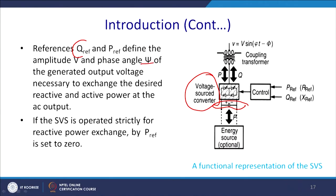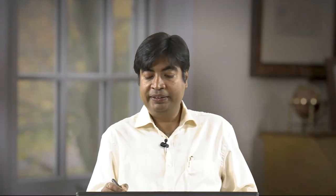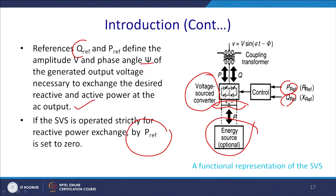The reference Q_ref and P_ref define the amplitude V and phase angle sigma, and the generated phase angle psi of the output voltage necessary to exchange the desired reactive and active power at the AC output. If the SSC is operated strictly for reactive power exchange by setting P_ref equal to zero, no storage element is required. The voltage V = V sin(omega-t minus phi) is stepped down via a coupling transformer to the level where semiconductor switches can operate.